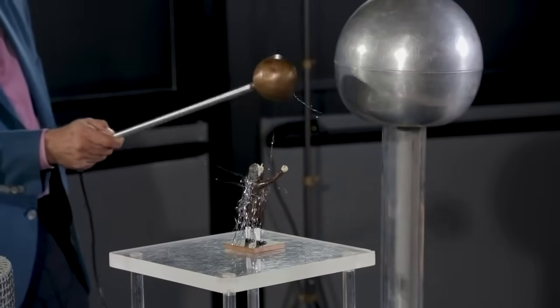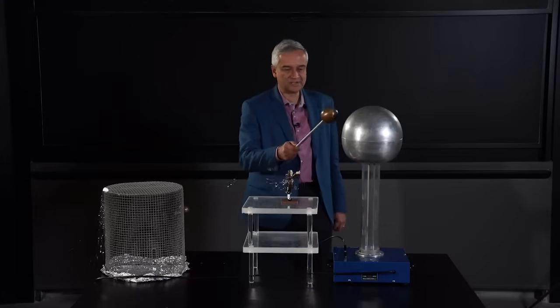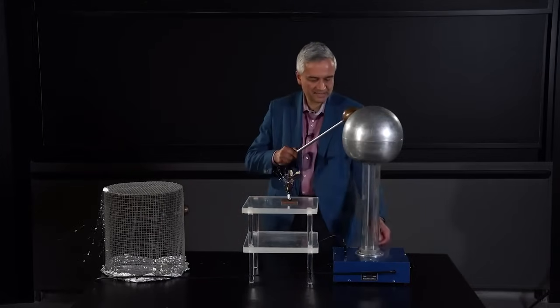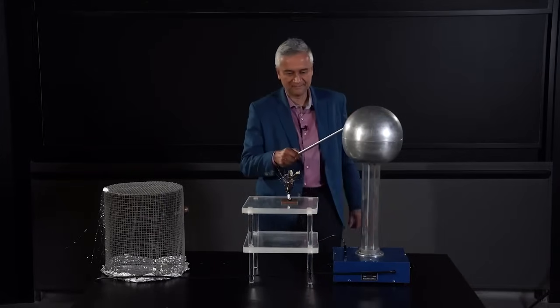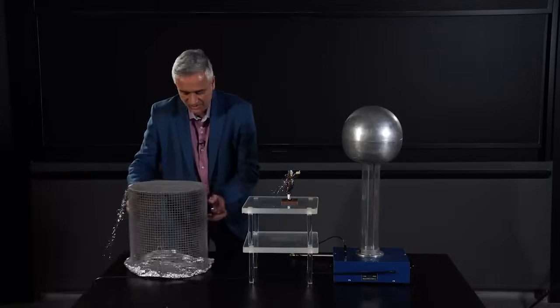So now what we're going to do is we are going to have the same thunderstorm, the same electric field, but we are going to put Benjamin in a Faraday cage. So to put him in the cage I'm going to start by turning this off and we'll ground him. Here's my Faraday cage right here.